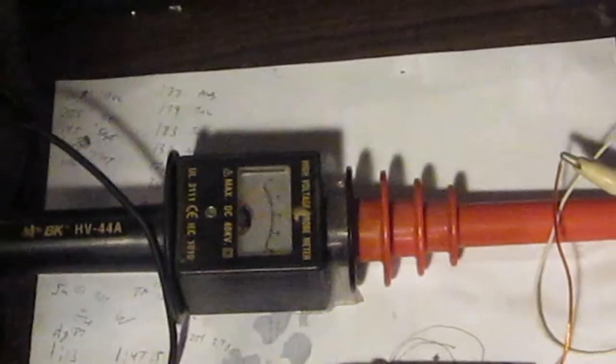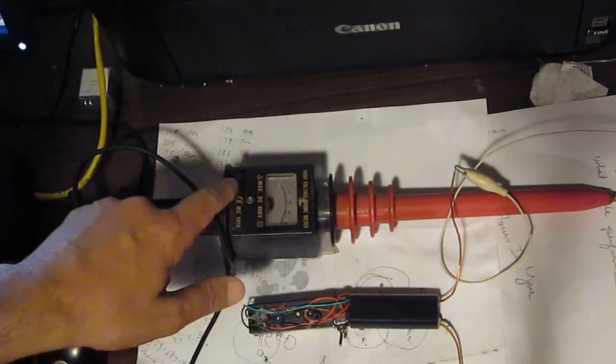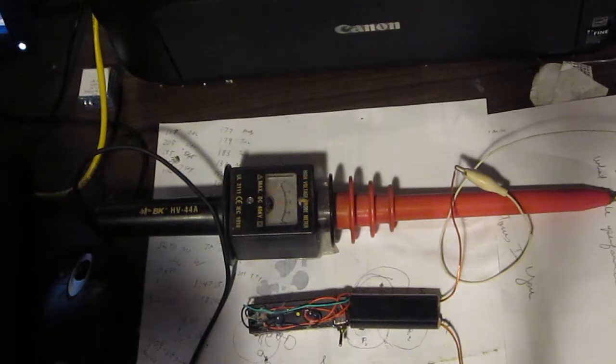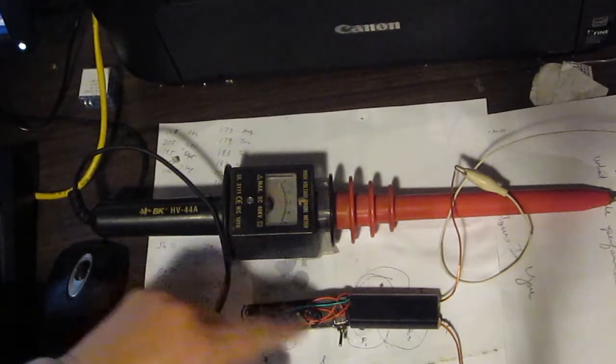But anyway, let's take a look back at the test setup again. And there we go, our high voltage probe, BK I-voltage 44A, which is capable of measuring up to 40 kilovolts.